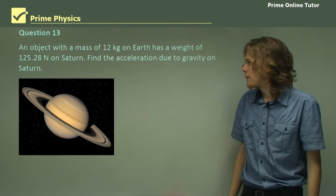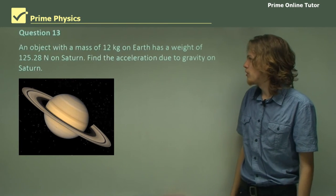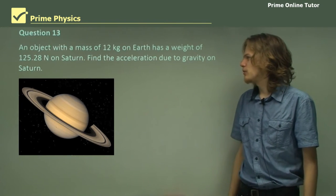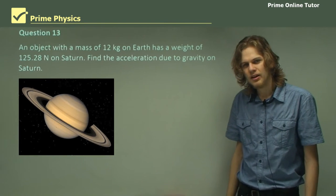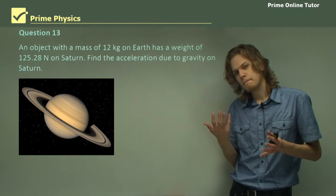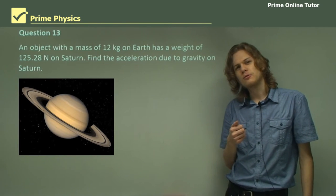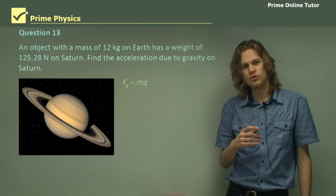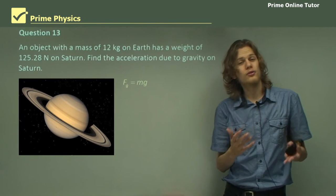Question 13. An object with a mass of 12 kilograms on Earth has a weight of 125.28 Newtons on Saturn. Find the acceleration due to gravity on Saturn. So what equation do we use here? Well, the answer is F equals mg. But in this case, the g isn't the 9.8 we're used to. It's an unknown number that we're trying to find.